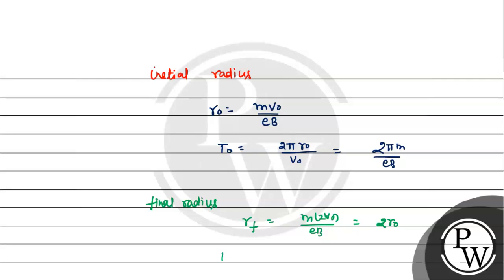If we talk about the final time period, Tf = 2πRf/Vf = 2π(2r0)/(2v0). The 2s cancel, giving us 2πr0/v0.